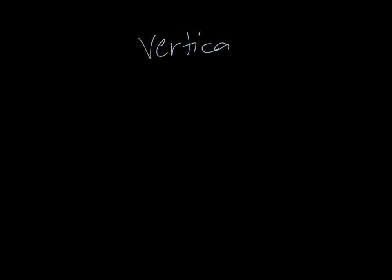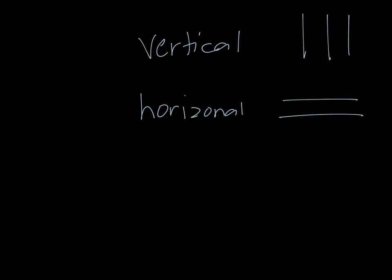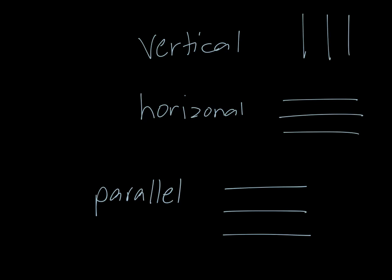To recap, we learnt about three different types of lines. We learnt about vertical lines, which go up and down. We learnt about horizontal lines, which go left to right. And we learnt about parallel lines — the lines which never meet. Thank you.